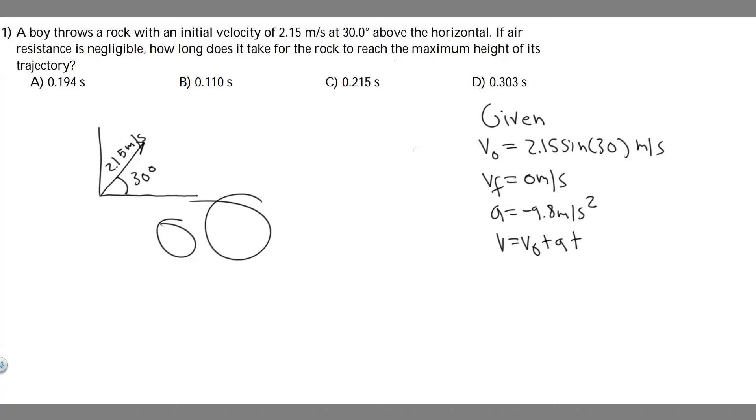In this problem, we're told a boy throws a rock with an initial velocity of 2.15 meters per second at 30 degrees above the horizontal. If air resistance is negligible, how long does it take for the rock to reach the maximum height of its trajectory?